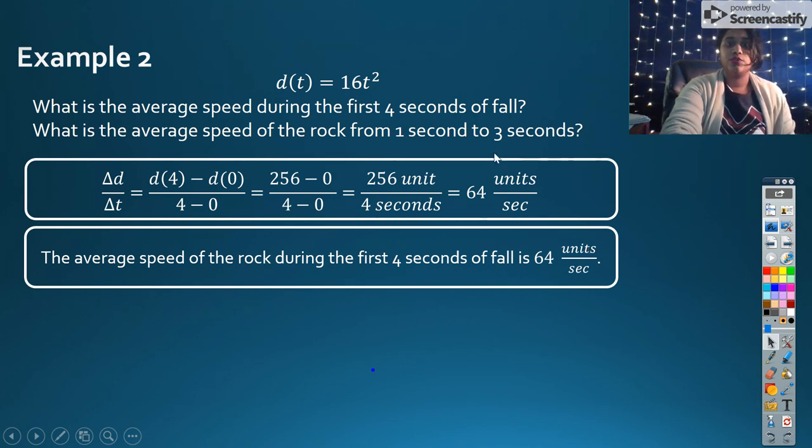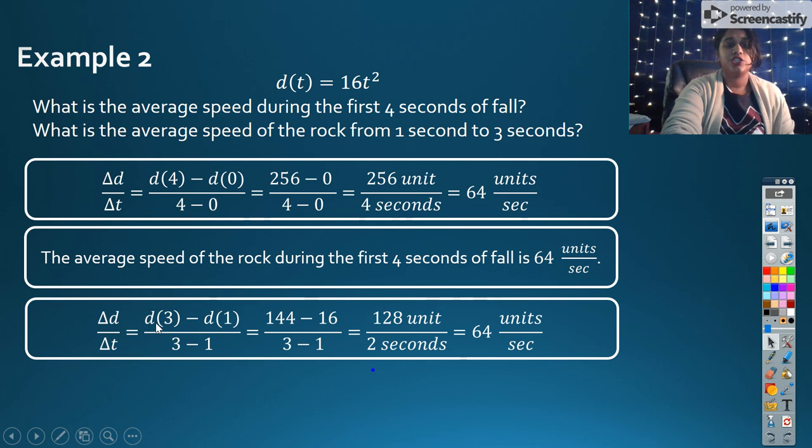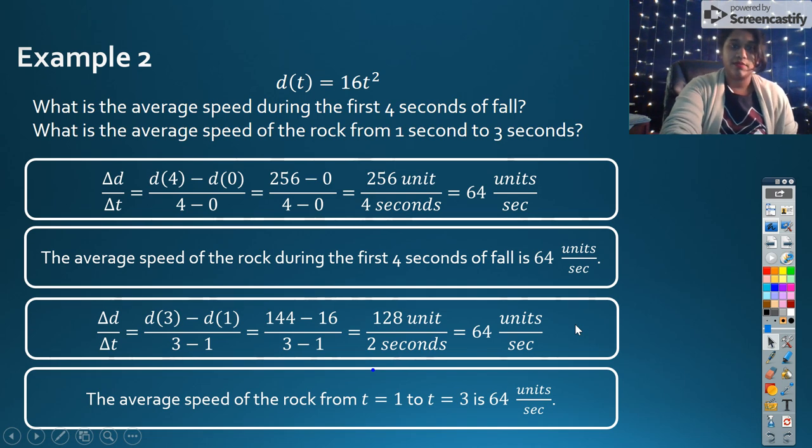Second question, we're going from 1 to 3. So I do the exact same thing. I just change my A and B values. I still get 64 units per second, but I can rewrite my statement as such.